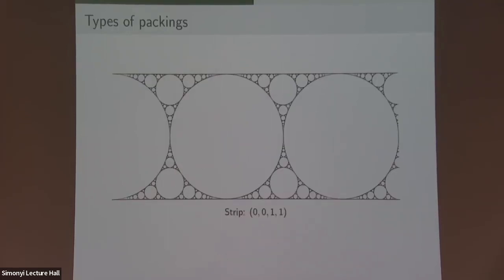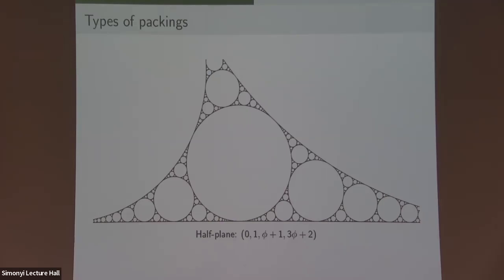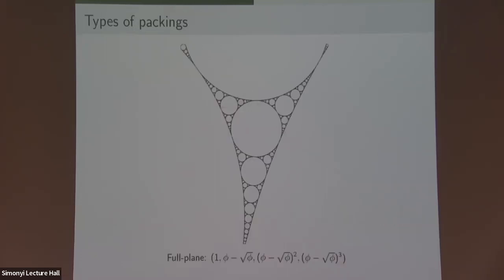You can also have the strip packing: curvature zero, radius infinity, is a straight line. So if you have two straight lines, you can pack between them — there's a unique strip packing up to scaling. You can also have a half-plane packing where you just have a single straight line and you end up packing an entire half-plane. This picture is actually self-similar — if you zoom in, you can see it's a fractal-like picture. The phi here is the golden ratio, which comes from solving the equation to make it self-similar. And this is a full-plane packing — probably the rarest — there are packings that can pack the entire plane.